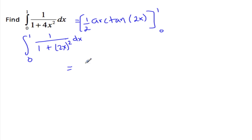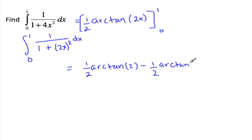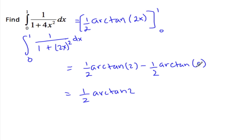Okay, so plug in 1: we get 1 half arctan of 2 minus 1 half arctan of 0. Well, 1 half arctan of 2 I'm just going to leave as is. And arctan of 0 — so when is tangent 0? That's what it's asking: what's the angle that produces a tangent of 0? Well, that's 0. So 1 half times 0 is just 0, so this is our answer.